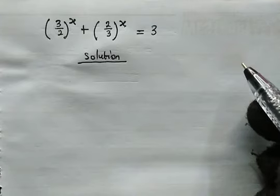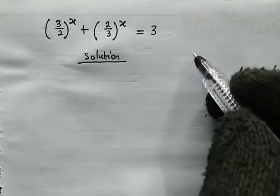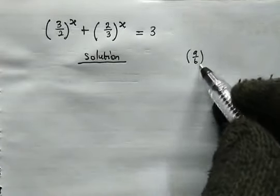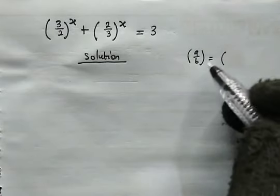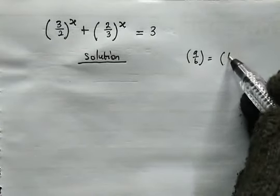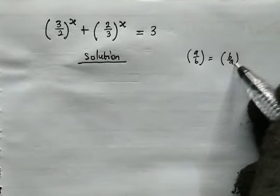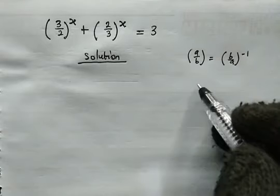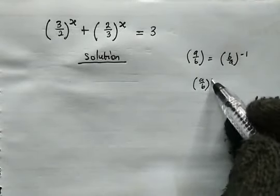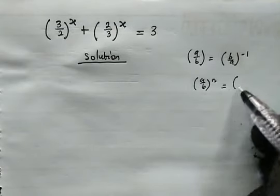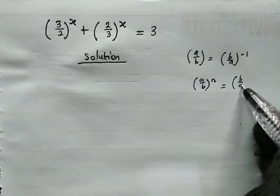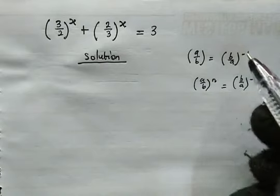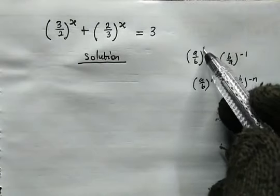Before we proceed, we need to take note of the following. When we have a over b, and we try replacing a and b — that is b over a — then we have a negative power of 1. But generally, when we have a over b to the power of n, this is the same as b all over a raised to the power of negative n. The reason why we have negative 1 here is because the power here is 1.